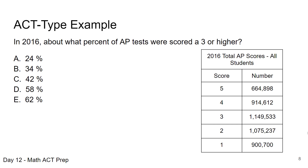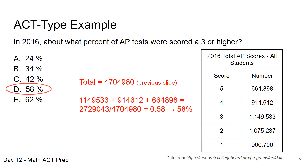Here's another ACT-type question using the same table data. In 2016, about what percent of AP tests were scored a 3 or higher? That means we're looking at anyone who scored a 3, 4, or 5. From the previous example we already found the total number of students. We find the number who scored a 3, 4, or 5, add those up, divide by the total, and we get 58% scored a 3 or higher. So that's option D.